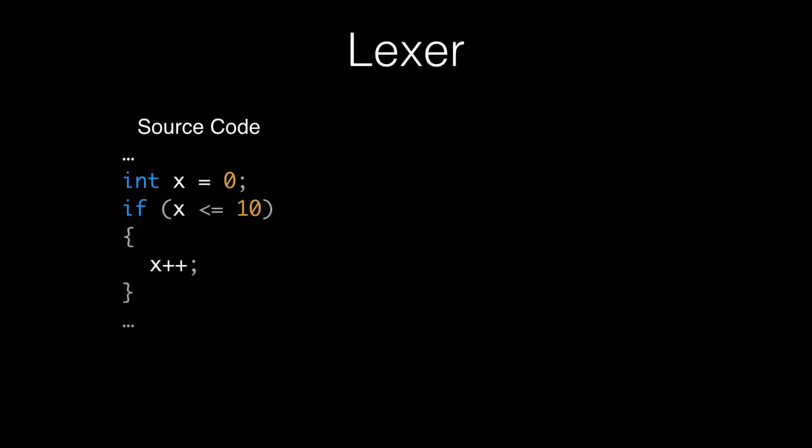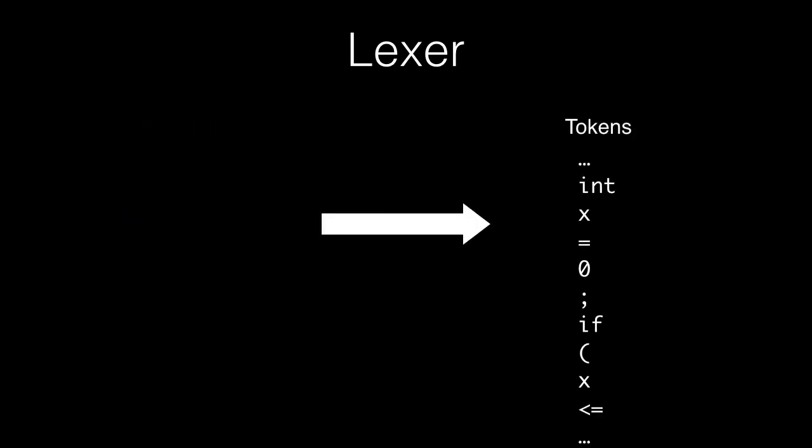Here we have a chunk of some C code that will be undergoing compilation. The source code shown is just basic variable declaration and if statement syntax. The lexer uses simple regular expressions to slice up the source code and convert it into tokens.